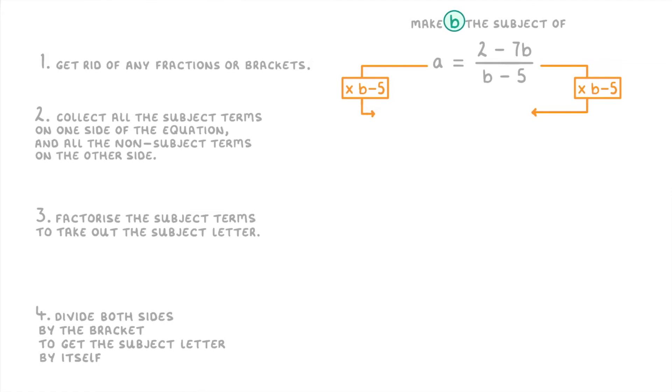So on the left we'll get a and then in brackets b minus 5, because remember we're multiplying the a by the entire b minus 5. And on the right we'll just have the 2 minus 7b. Now even though we just got rid of our fraction, we're still on step 1 because we now have a bracket. So we're going to have to expand the bracket by multiplying the a by the b to give us ab, and by the minus 5 to get minus 5a, and remember that they're still all equals 2 minus 7b.